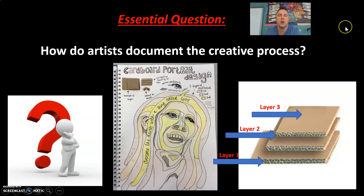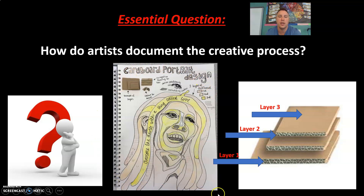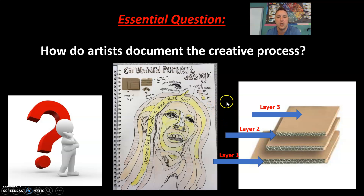Your central question is: how do artists document the creative process? This is the question you'll be answering in your entrance ticket. Just like your first art task for your unit, you're essentially going to be sketching out your image — what you want to create for your relief — and labeling the different sections and what layers they are. You can see the first layer was shaded in light brown, the second layer is a yellowish brown, and the third layer, furthest out, is in yellow. That's essentially how you would start the documentation of this process by creating that sketch.